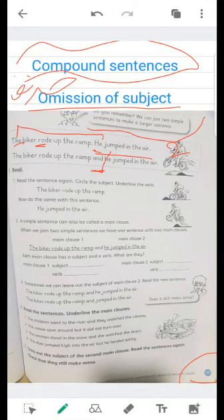Let's read the rest. Read the sentences again. Circle the subject, underline the verb. We have to circle the subject and underline the verb. The biker rode up the ramp. What is the subject? The verb rode up the ramp. Now do the same with this sentence. We have to do the same with the second sentence. Circle the subject and underline the verb. So we have the same subject but we have different verbs.